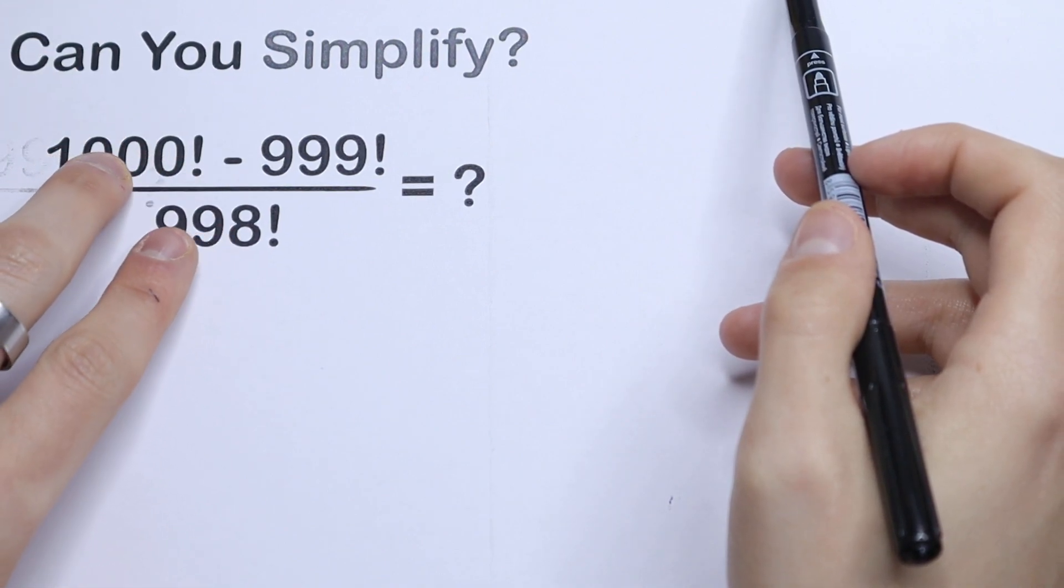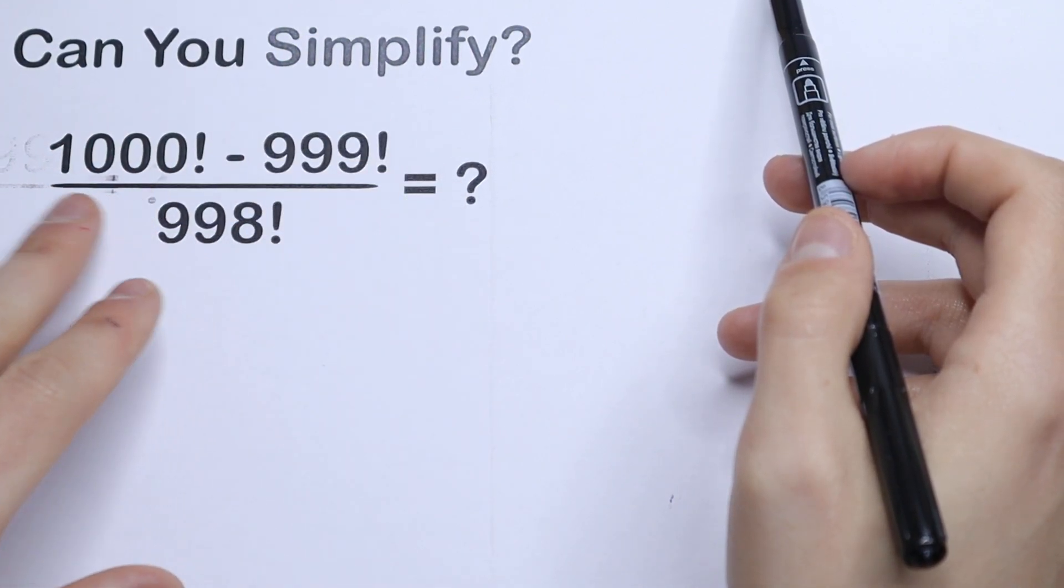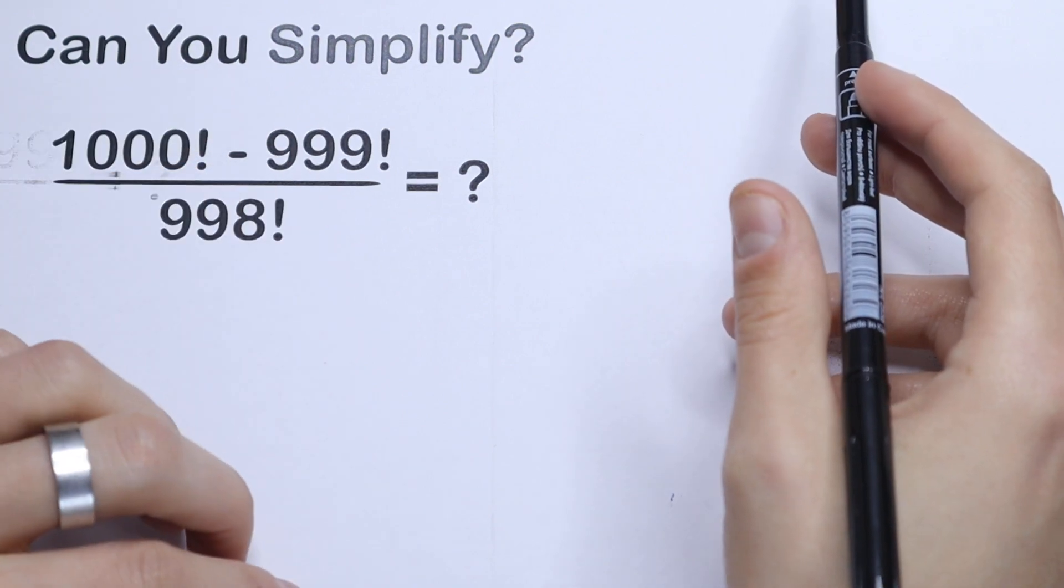We need to simplify this: 1000 factorial minus 999 factorial, all over 998 factorial. How can you simplify this?